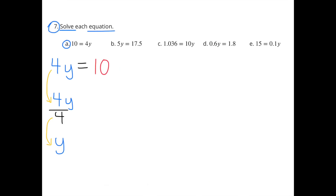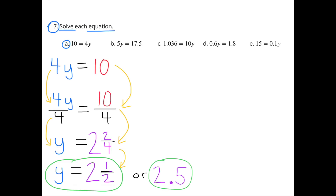Number 7, solve each equation. A: 10 equals 4y, rewritten as 4y equals 10. Dividing both sides by 4: 4y divided by 4 equals y, and 10 divided by 4 equals 2 and two-fourths, or 2 and a half. So y equals 2.5.